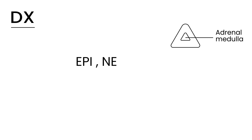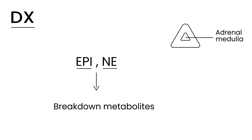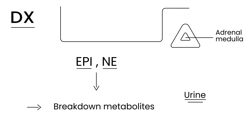The tests are very specific and not normally ordered. The adrenal gland, in particular the adrenal medulla — the middle part of the gland — secretes catecholamines, epinephrine and norepinephrine. When these catecholamines break down in the body, they break down into metabolites, and it's the metabolites that you test for. You test for those in the urine. Those catecholamine breakdown products are on almost every licensing exam, and they are VMA and HVA.